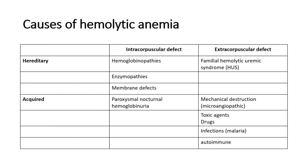The causes can be divided into hereditary or acquired, and also into intracorpuscular or extracorpuscular defect. For hereditary causes there are hemoglobinopathies including sickle cell disease and thalassemia, enzymopathies which include G6PD deficiency or pyruvate kinase deficiency, and membrane defects such as hereditary spherocytosis or elliptocytosis, and also hereditary ovalocytosis or stomatocytosis where the morphology of the cells is different.